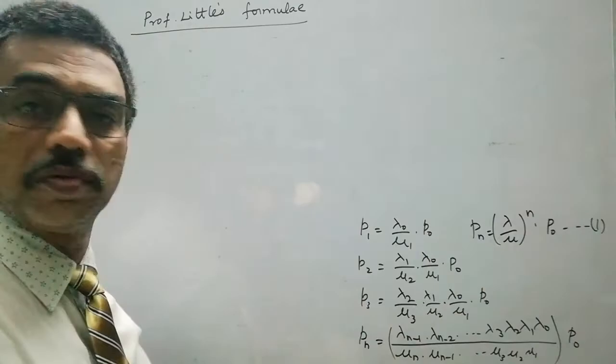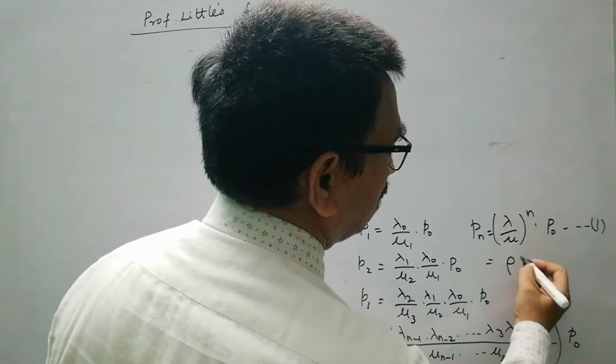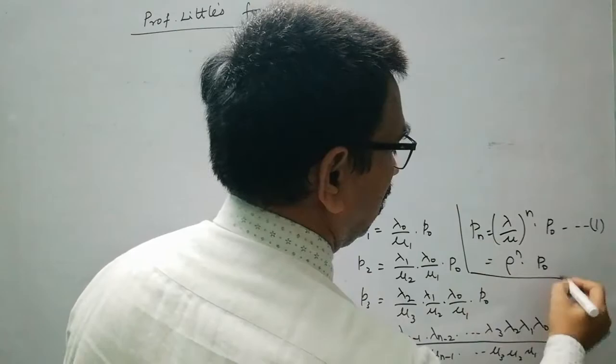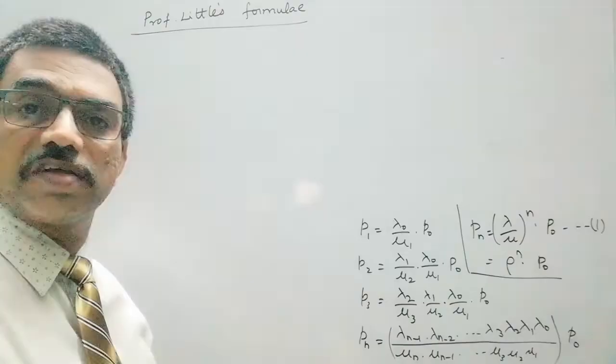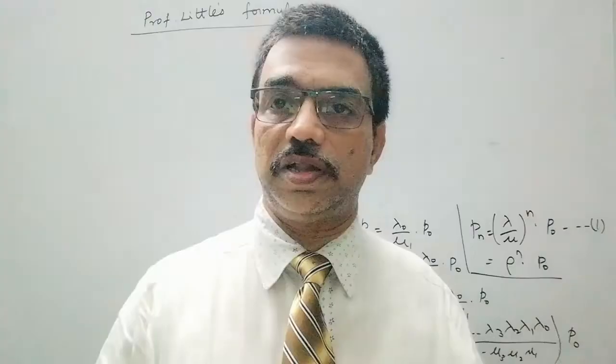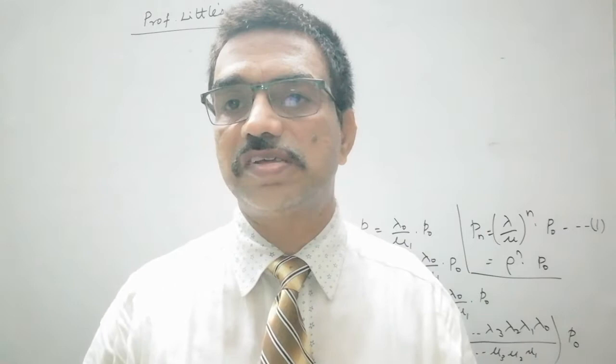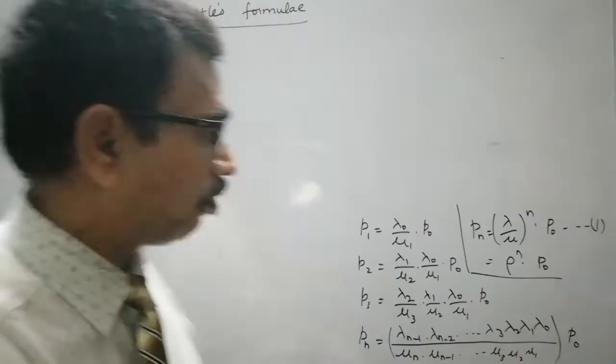We have P₁, P₂, P₃ in terms of P₀, λ, and μ. We can write the ratio λ/μ as ρ, so Pₙ = ρⁿ × P₀. Now let us derive the expressions for average number of customers in the queuing system, average number of customers in the queue, and average waiting times Ws and Wq.